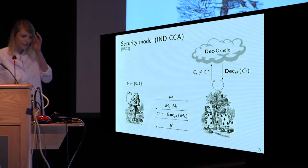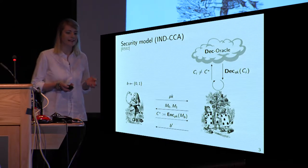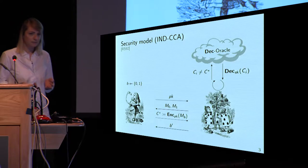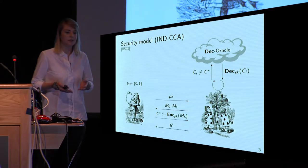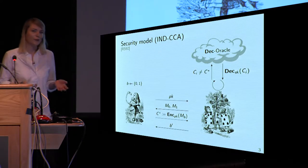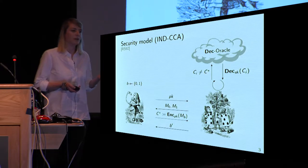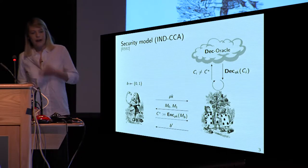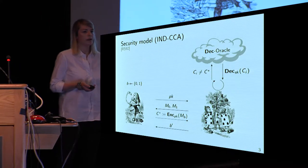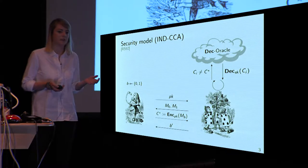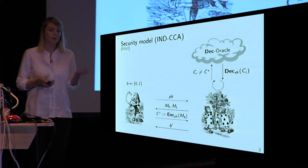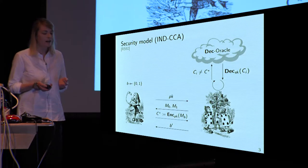The model of security we have here is IND-CCA security. You can see the experiment here corresponding to this model. The adversary gets a public key, can choose two messages M0 and M1 of the same length, send them to the challenger, gets an encryption back of one of the respective messages, and in the end has to find out which of the messages was encrypted. As we want to consider active security, we additionally provide the adversary with a decryption oracle — an oracle where he can query anything but the challenge ciphertext and gets the respective decryption.